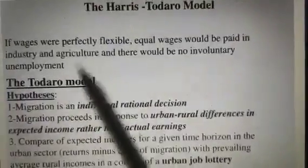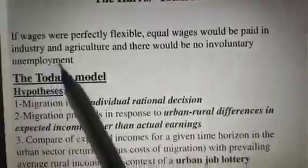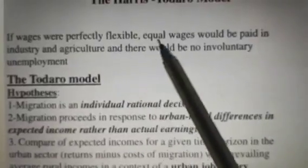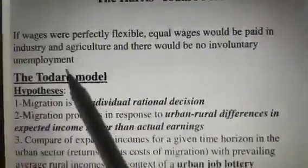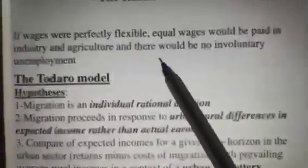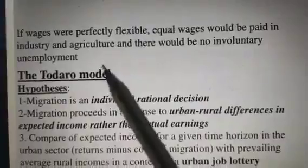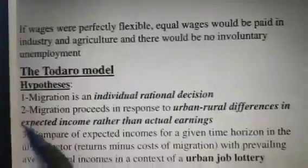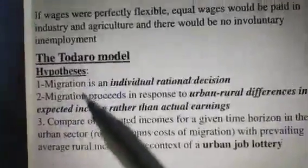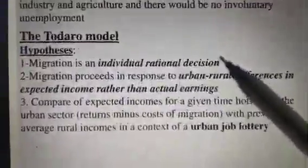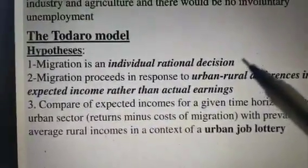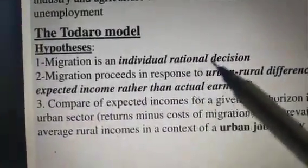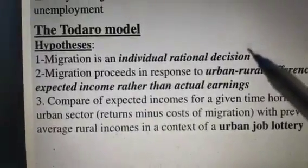What does the Harris-Todaro model say? It says that if wages were perfectly flexible and equal wages were paid in industry and agriculture, there would be no involuntary unemployment. The model begins with certain hypotheses. The first one is that migration is an individual rational decision — nobody is forcefully pushing or pulling, but it is an individual rational decision.